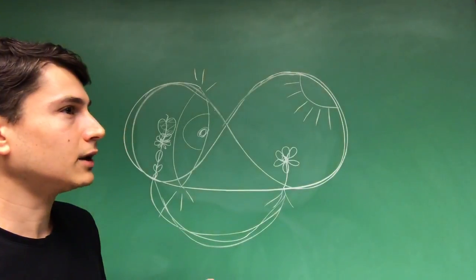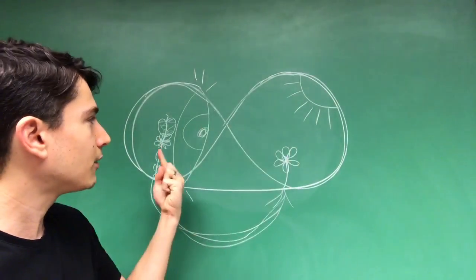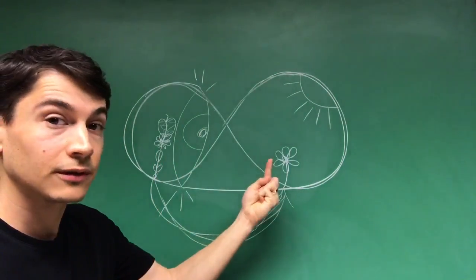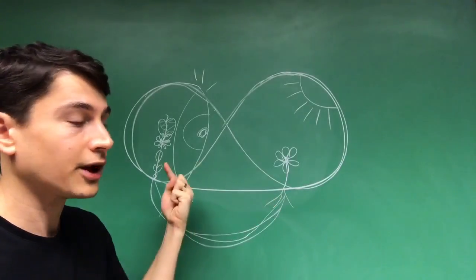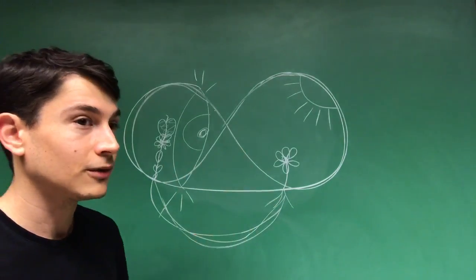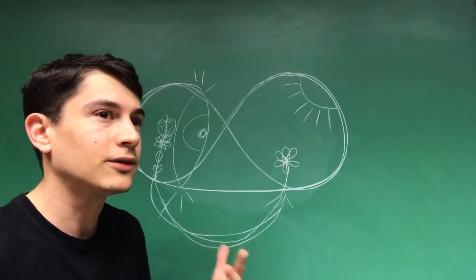So for Goethe, there's a way in which the world depends upon the subject for its own completion, just as the subject depends upon the world to bring it to its senses.